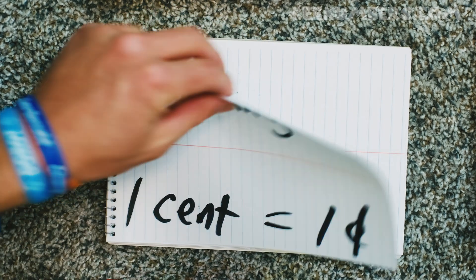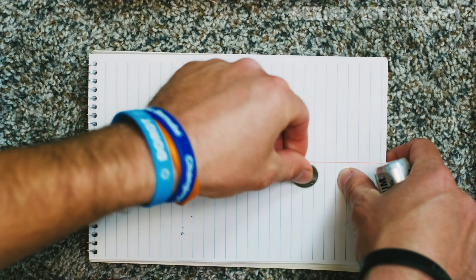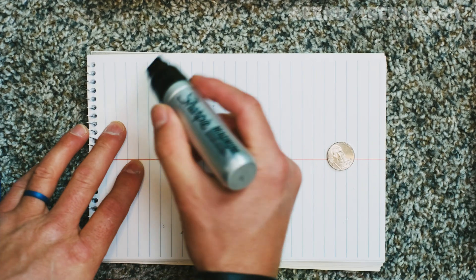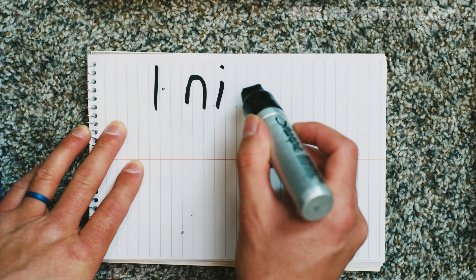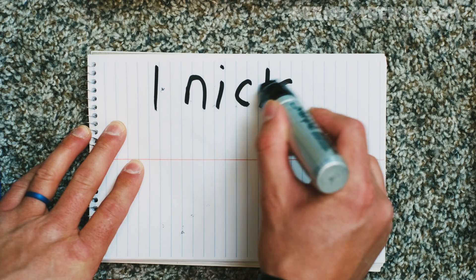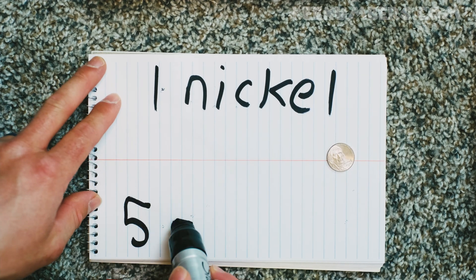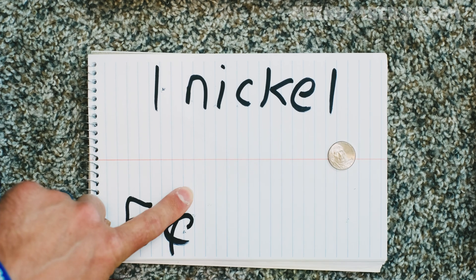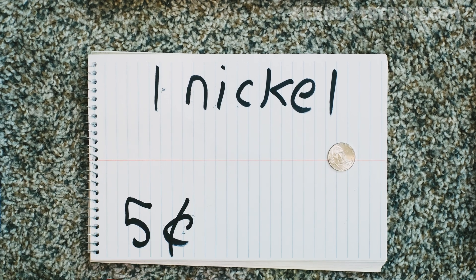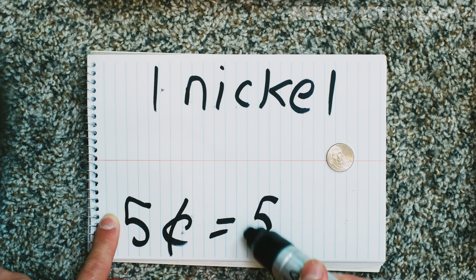Now if you have five pennies, that's equal to a nickel. One nickel — N-I-C-K-E-L — that's equal to five cents. Again, you draw your C and then a line through it. That's five cents.